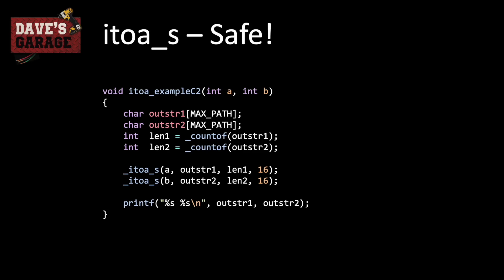With itoa_s, we first calculate the length of the two buffers using the countof operator in C, which is reasonably new. Unlike sizeof, which returns the size of the array in bytes, countof returns the number of elements in that array. Once we have the two lengths, we include them in our call to itoa_s, which will respect the output buffer length. In this example we are still declaring large buffers, but we could have used 16 instead of maxpath.